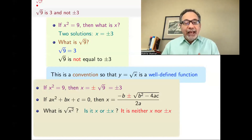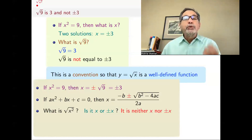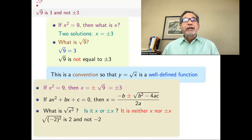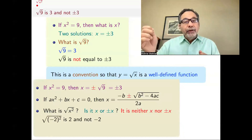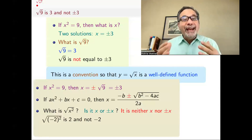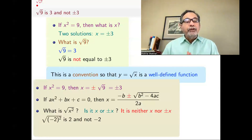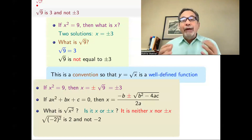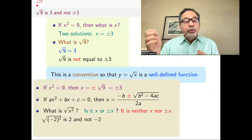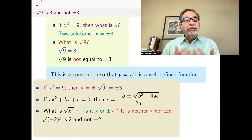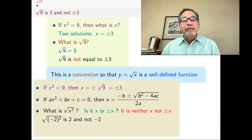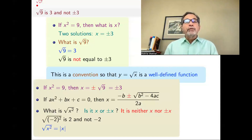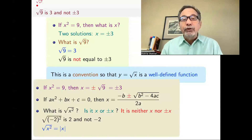You might say: didn't you just say square root of 9 is just 3? Wouldn't square root of x squared be just x? No, because we don't know if x is positive or negative. For example, if I have square root of minus 2 squared — if my x is minus 2 — if square root of x squared were x, I would have got minus 2. But minus 2 squared is 4, and square root of 4 is 2 and not minus 2. So the way we get around that is by saying that square root of x squared is absolute value of x.